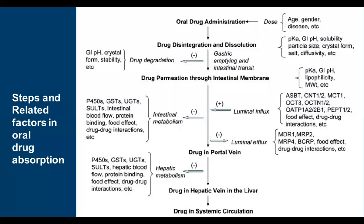There are many factors in drug absorption: oral drug administration, age factors, pharmacokinetic factors, drug degradation factors, drug permeation through intestinal membrane, binders or receptors, portal vein transporters (including P450), blood flow, protein binding, ABCST, luminal efflux transporters, hepatic transporters — and finally the drug enters systemic circulation. There are many steps — nine or more — involved, and controlling this with input factors to predict is very tough.